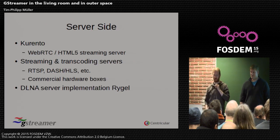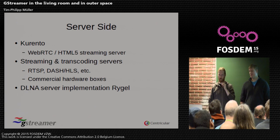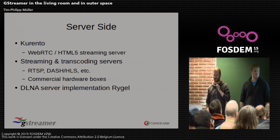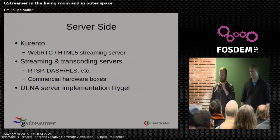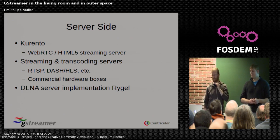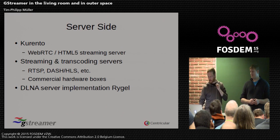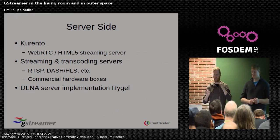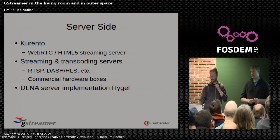On the server side, we also have quite a few applications. Most notable currently is Corento, which is a WebRTC HTML5 streaming server. It's huge, very enterprise-y, and you can basically do everything with it. We also have smaller things like all kinds of little streaming and transcoding servers built on GStreamer. We have our own RTSP server implementation, support for DASH and HLS. You can even buy commercial hardware boxes where you plug in inputs and it just encodes and sends to the network. There's also a DLNA server implementation called Rygel, which has existed for quite a few years, works quite well, and uses GStreamer for on-the-fly transcoding — if your device can't handle a specific codec, it just transcodes on the fly.